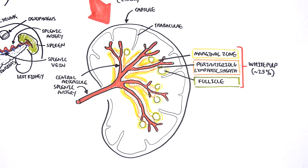Because the white pulp contains immune cells, it is important in fighting infections such as from viruses, mounting an immune response, and producing antibodies. We know this because if we remove the spleen, the person would have lower amounts of antibodies in the blood, and people without spleens are at an increased risk of infection.